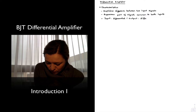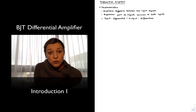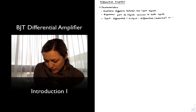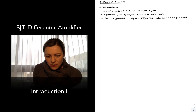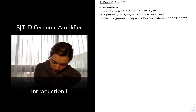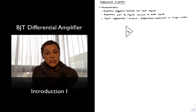So the output can be differential — sometimes the differential output is also referred to as a balanced output — or single-ended. And in its block diagram form, it will look something like this. We have our differential amplifier: imagine a voltage amplifier with a differential gain.